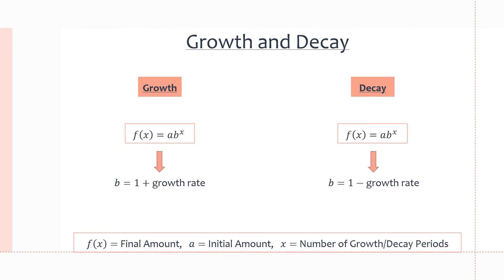Let's get right into growth and decay. The growth and decay formulas are pretty much identical — the only thing that changes is the rate of growth or decay, which is represented by the variable b. For both exponential growth and decay, the equation is f(x) = a · b^x, where a is the initial amount and b gives us the growth or decay.